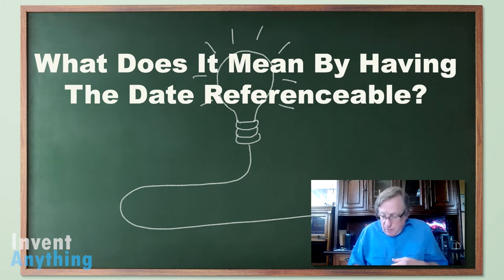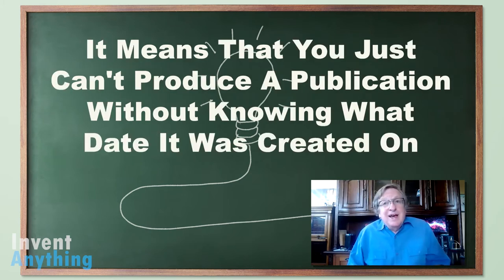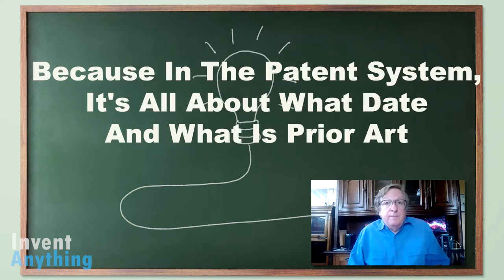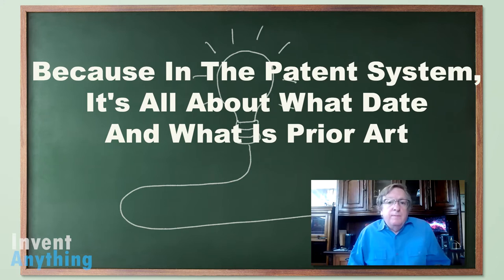What does it mean for the date to be referenceable? It means you can't produce a publication without knowing what date it was created on — because in the patent system, it's all about what date and what is prior art. So Enabled Publications, at least in IP.com, are date stamped. Enabled Publications need to be date stamped.